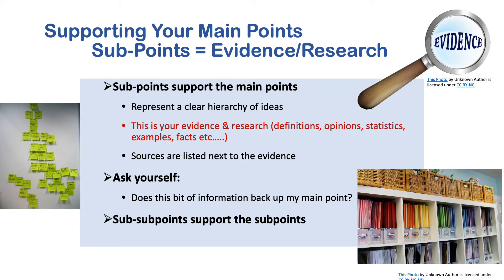Each main point is going to have sub points. The sub points are the evidence and your research — your definitions, opinions, statistics, examples, facts, all the details you've researched. On the outline, main points would be labeled A, B, and C, and your sub points are numbered one, two, three, four. Remember outlining protocols: if you have a one, you have to have a two, so you need at least two sub points. But you might need three, four, or even five. You determine the amount of evidence needed to support that main point.